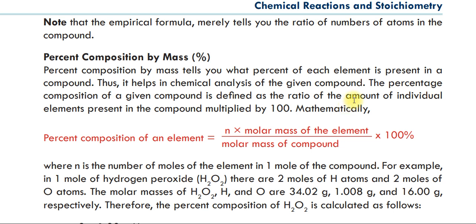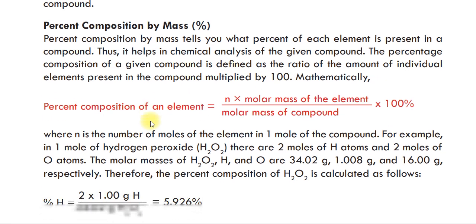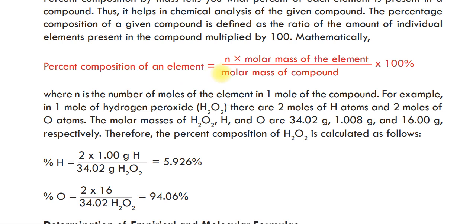Mathematically, the percent composition of an element is equal to n times the molar mass of the element divided by the molar mass of the compound, multiplied by 100%. Where n is the number of moles of the element in one mole of the compound.